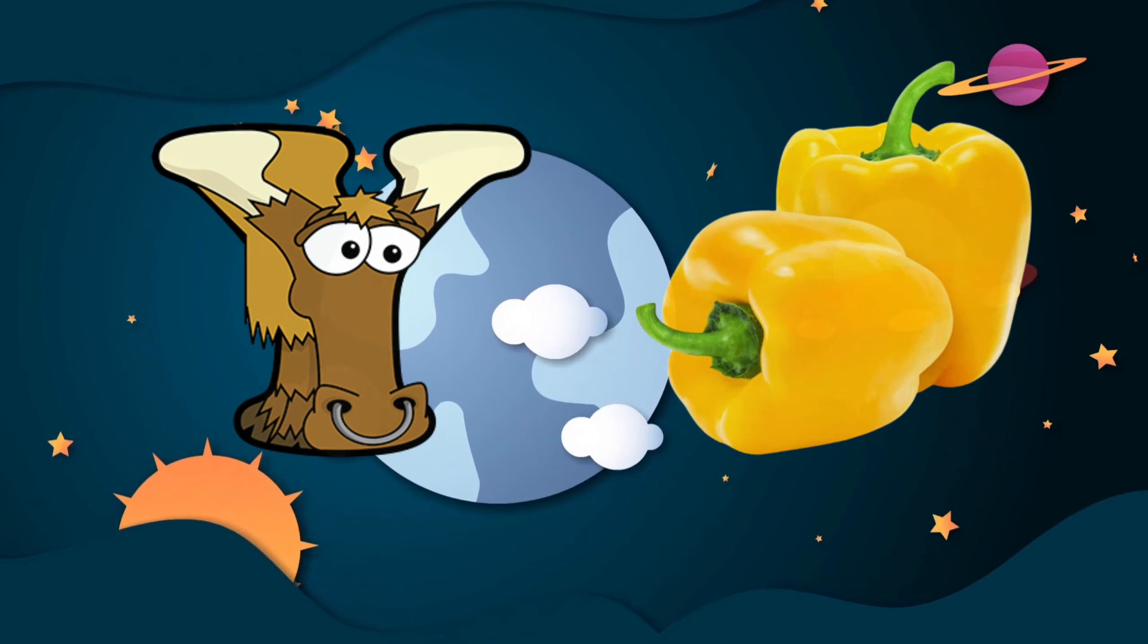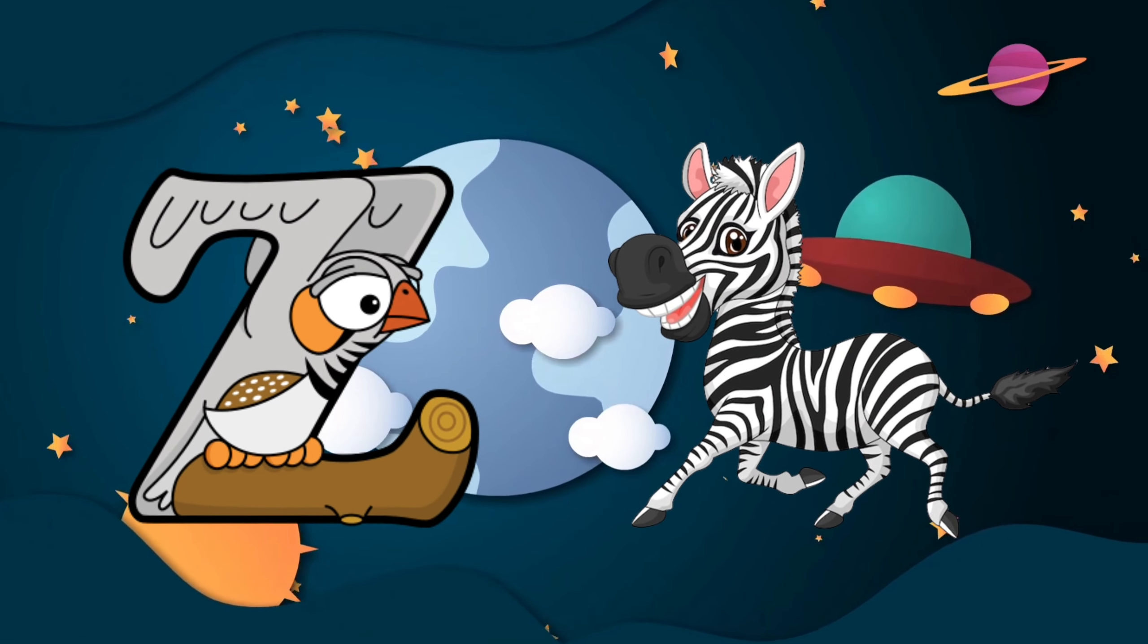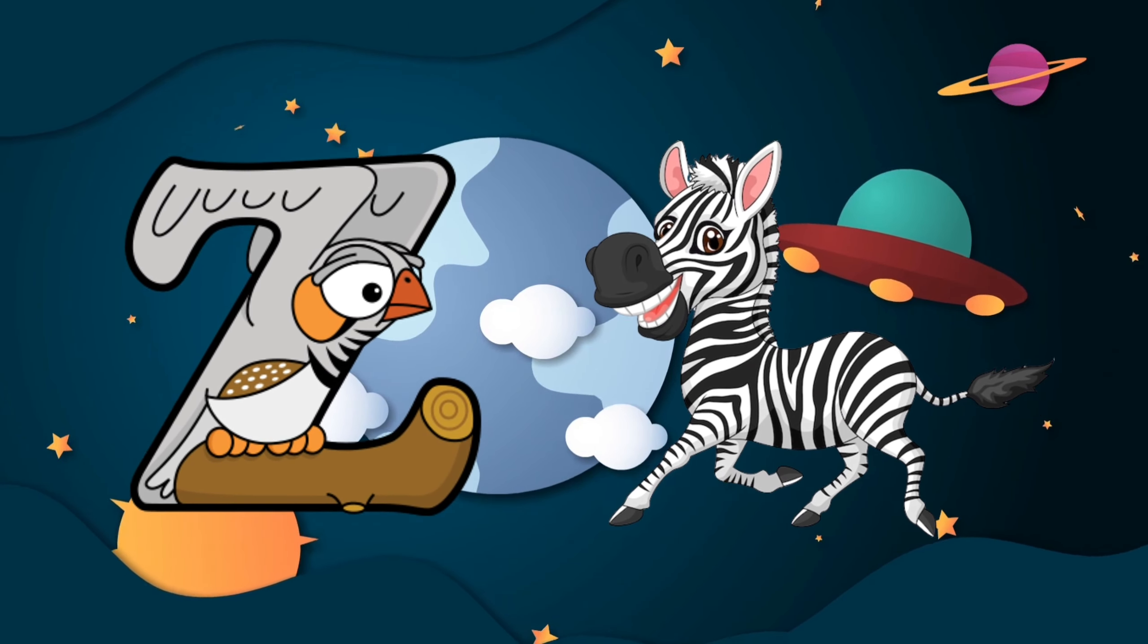Y is for yellow, ye-ye-yellow. Z is for zebra, z-z-zebra.